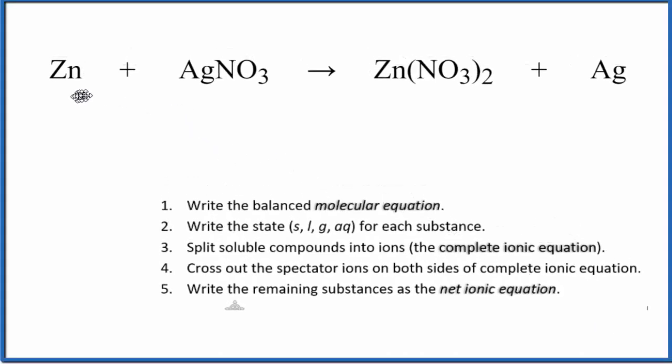To write the net ionic equation for Zn plus AgNO3, that's zinc plus silver nitrate, we'll use these rules here. This is a single displacement reaction.